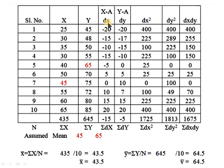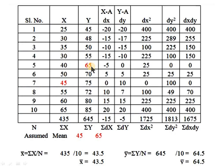We calculate the actual mean: x-bar equals Σx/n equals 435 divided by 10, which is 43.5. The nearest value is 45, so we take 45 as our assumed mean for x. For y, y-bar equals Σy/n equals 645 divided by 10, which is 64.5. The nearest value is 65, so we take 65 as the assumed mean for y.